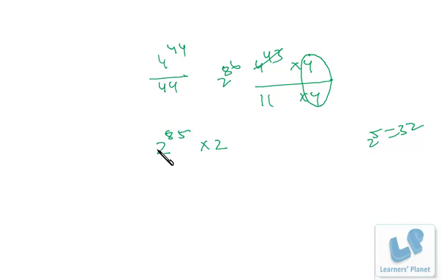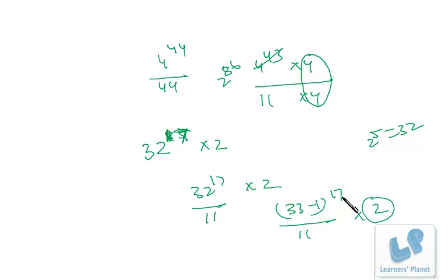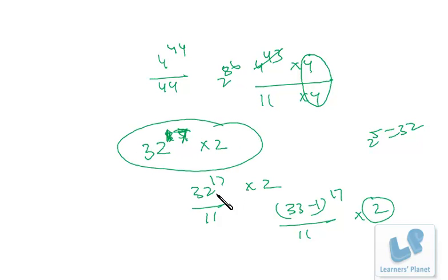2^85 = 32^17. Now 32 = 33 − 1, so we have (33 − 1)^17 × 2 divided by 11. Since 33 is divisible by 11, the remainder of (33 − 1)^17 is (−1)^17 = −1. Multiplying by the extra 2 gives −1 × 2 = −2. Since a negative remainder means the actual positive remainder is 11 − 2 = 9.